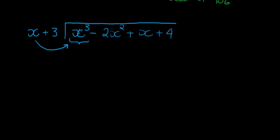I'll divide x into that x³. Now, how many times does it divide? It divides x² times. So, x³ divided by x gives me x². And now, I multiply my x² back, but to all of the terms. So, I distribute it. x² times x gives me x³. x² times 3 gives me positive 3x².